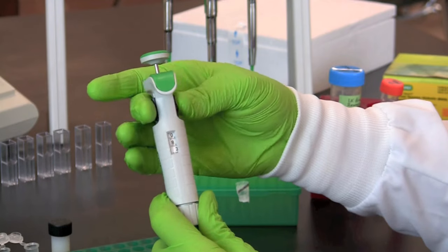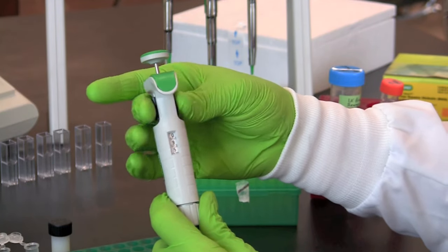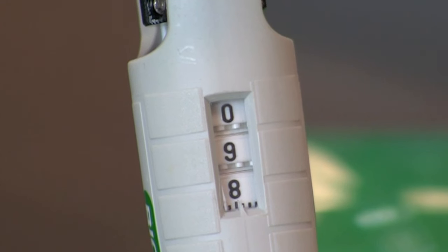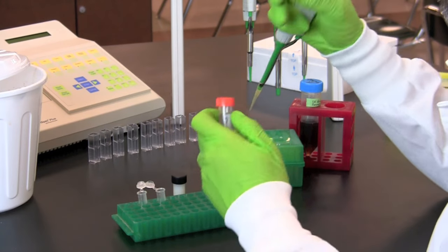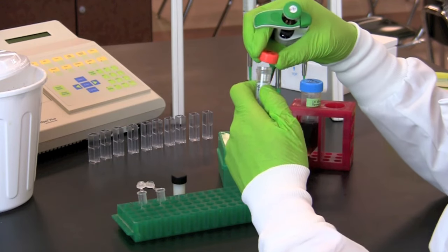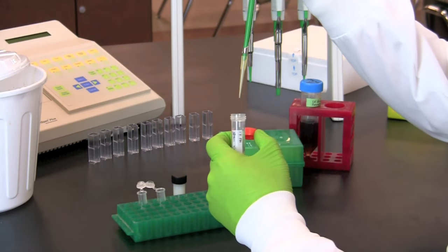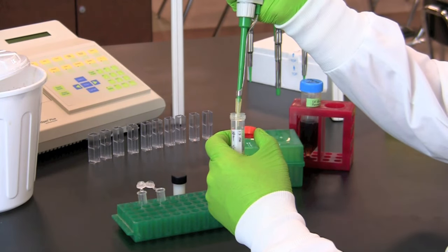Using a 20 to 200 microliter micropipet, set the pipet to 98 microliters. Pipet 98 microliters of 1x PBS into an empty microcentrifuge tube labeled sample.